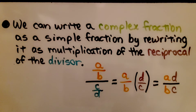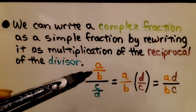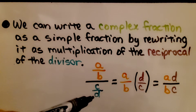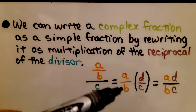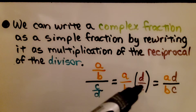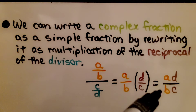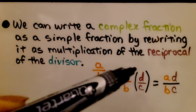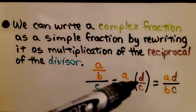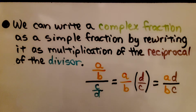We can write a complex fraction as a simple fraction by rewriting it as multiplication by the reciprocal. Here we have A/B as our numerator and C/D as our denominator. We can write it as A/B multiplied by the reciprocal D/C. We can then give it one fraction bar and write it as A times D over B times C — a simple fraction.